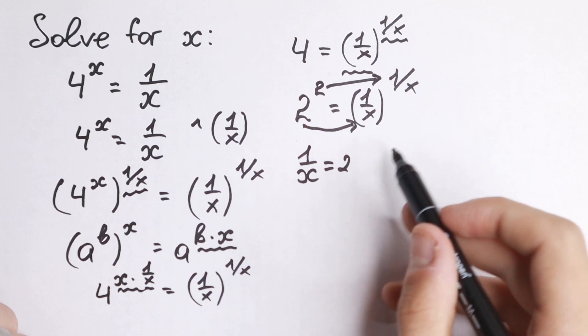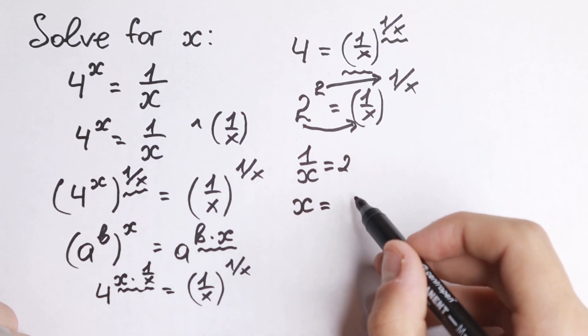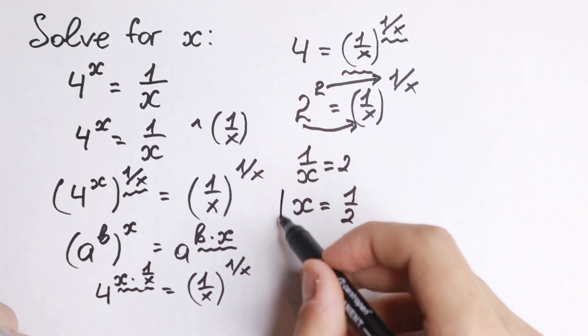And how can we find it? Of course, by cross multiplying, we will have x equal to 1 half. And this is our answer.